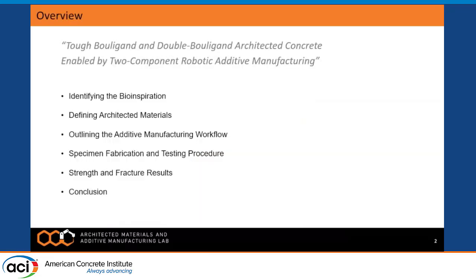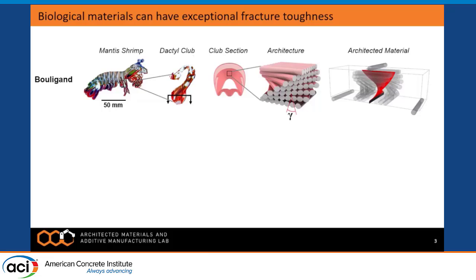I'll begin by describing our bio-inspiration: the Bouligand and double Bouligand architecture. This is the Bouligand architecture found in the mantis shrimp. We see chitin fibrils oriented in a helical fashion, defined by a relative rotation of pitch angle gamma. When this organism hits something, fractures occur between the chitin fibrils joined by a weak protein matrix, and the crack deflects along the orientation of those fibrils in a twisted manner.